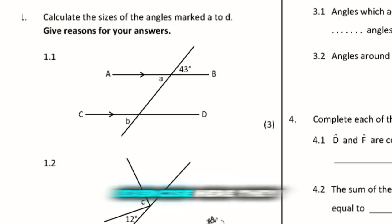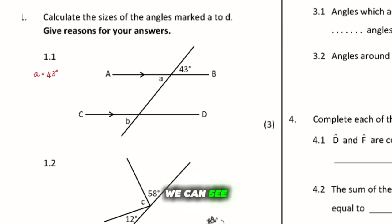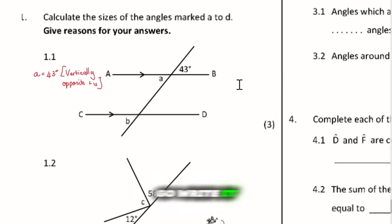But to come back to today's exercise, they ask us calculate the sizes of the angles marked A to D. Give reasons for your answers. If we look at this angle right here, you can see that angle A is right there. And they want us to calculate that angle. So how can we calculate A? We see that angle A is intersected there. So we can say that A is equals to 43 degrees. But if we look at that closely, we can see what is the reason. The reason here is going to be vertically opposite angles. And vertically opposite angles are always going to be the same. Once you have calculated the angle, go write it into your sketch as well.